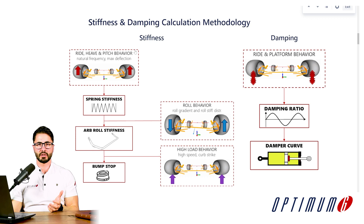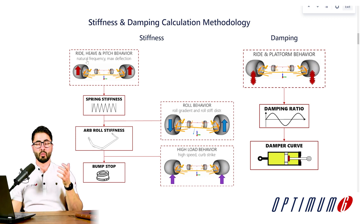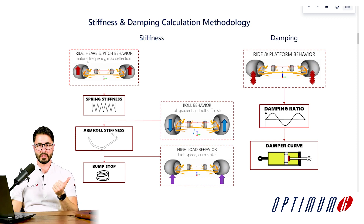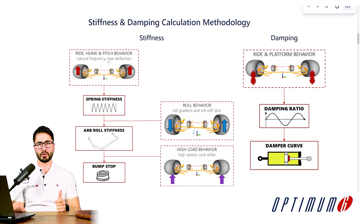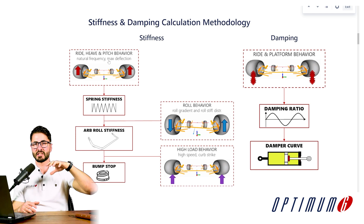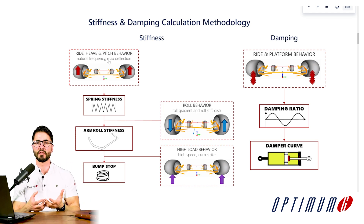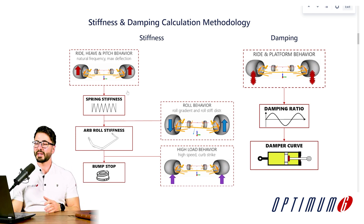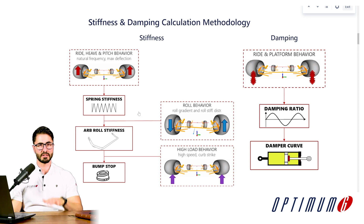There are a few key metrics that we should be determining. For example, what is the natural frequency of our suspension? What is the maximum deflection that it could achieve? Or even, what is the pitch gradient that I expect this type of car to have? Now that we have this defined, we can then calculate our spring stiffness, and later on I'm going to show you how to do that.